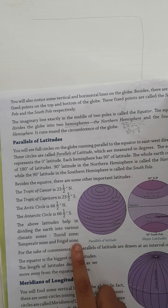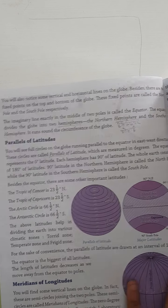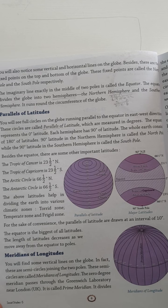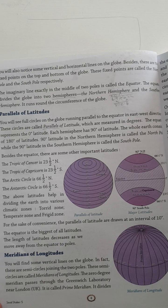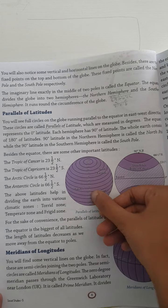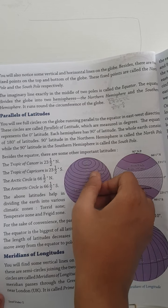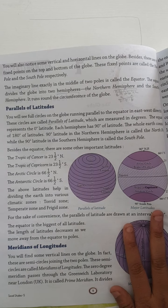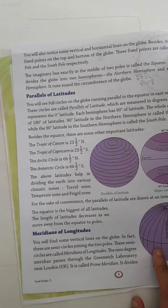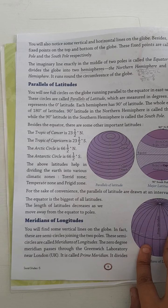The above latitudes help in dividing the earth into various climatic zones. For the sake of convenience, parallels of latitudes are drawn at an interval of 10 degrees. Starting from 0 degrees at the equator, then 10, 20, 30, 40 — there is a difference of 10 degrees. As we move away from the equator, the length of the latitude decreases.